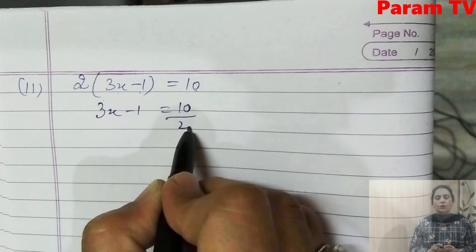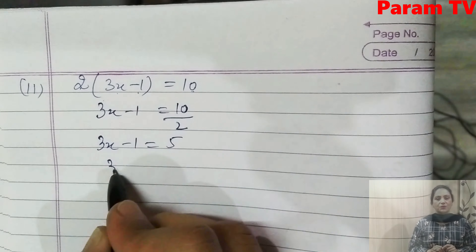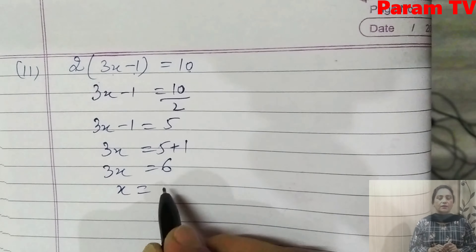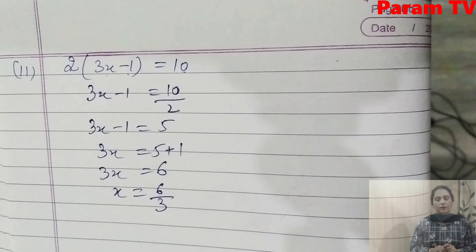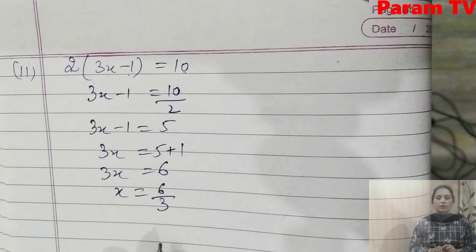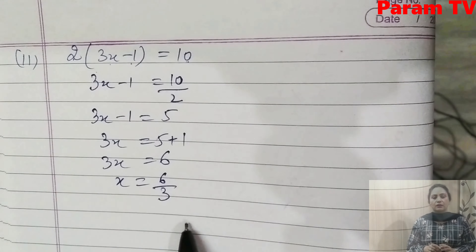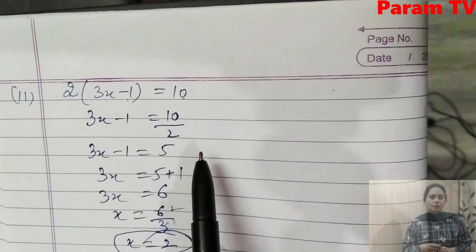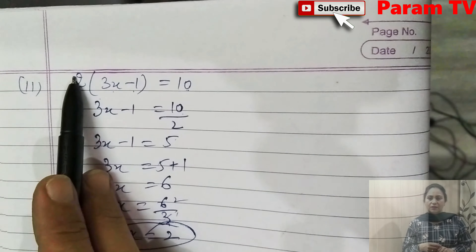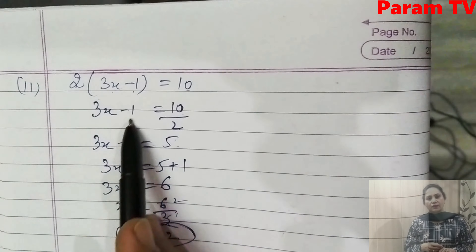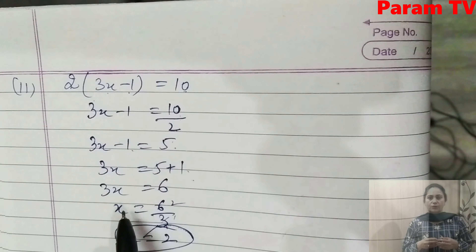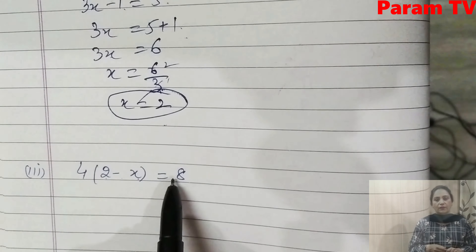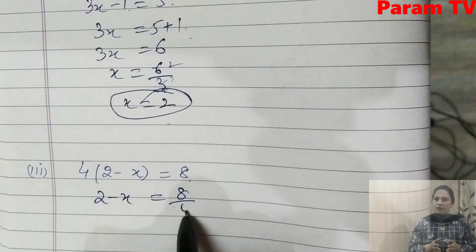Next is the second part: 2(3x - 1) = 10. Divide both sides by 2: 3x - 1 = 5. Then 3x = 5 + 1 = 6. So x = 6/3 = 2. So x = 2 is the answer. The steps are very easy — first divide by 2, then transpose -1, then divide by 3.